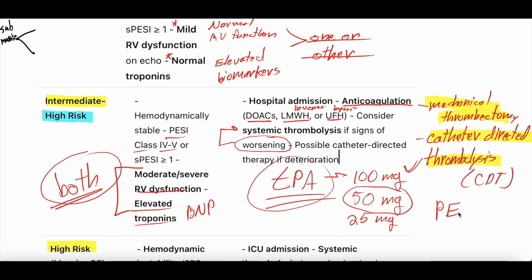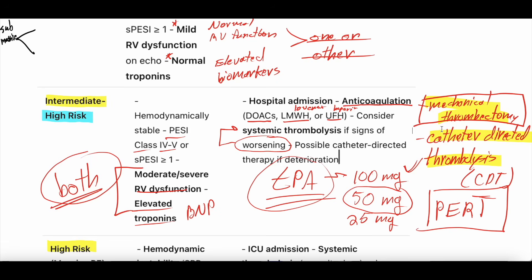Intermediate high risk is where the management strategies become interesting, and this is often some of the beauty of a PERT team — pulmonary embolism response team — which many hospitals have. It usually involves an ICU doctor, interventional cardiologist, interventional radiologist, pulmonologist, and pulmonary hypertension specialist to discuss these cases. We think mechanical thrombectomy is probably going to become more universally recommended for a lot of these patients, possibly even for intermediate low risk.